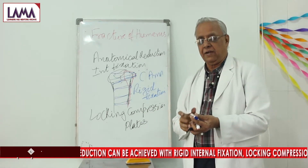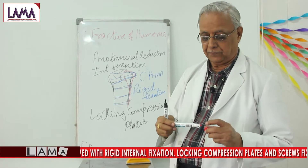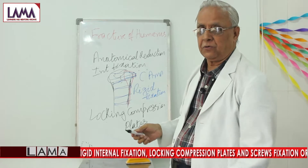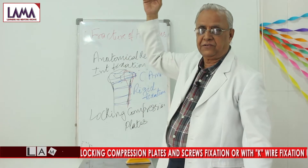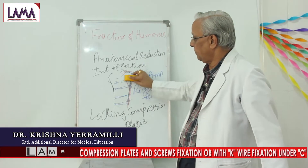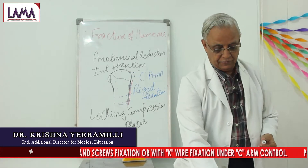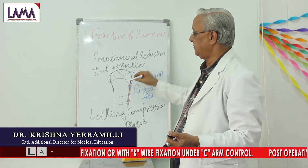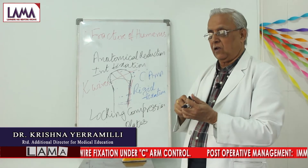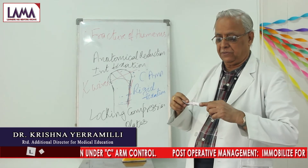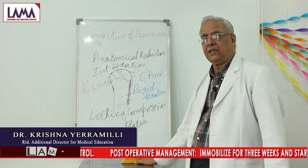For post-operative management, the patient is mobilized for about three weeks and then physiotherapy is started. With fragments held together in their anatomical position, mobilization can begin much earlier. Another alternative, when only one or two fragments are involved, is to fix the fragment in position using K-wires — one or two wires to keep it in place. So the two alternatives are a locking compression plate or K-wires. Post-operatively, keep the arm in a pouch for at least three weeks, then start physiotherapy.